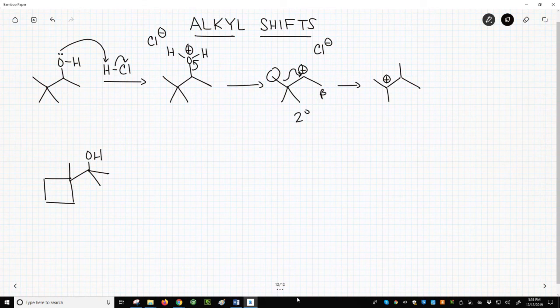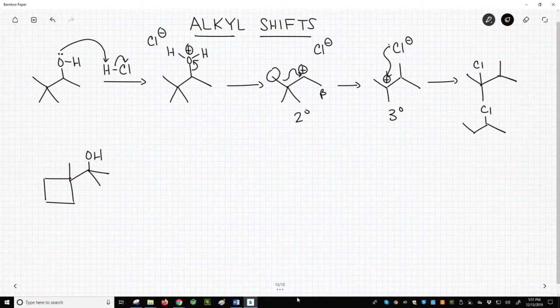Once we get our new carbocation is now tertiary, the chloride can attack to give our SN1 product. Note that the SN1 product from the secondary carbocation will not be observed.